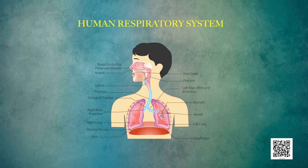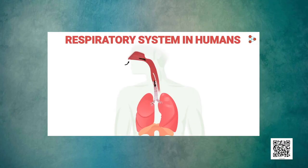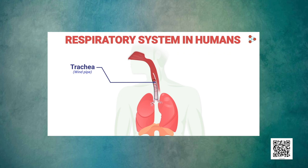Coming to the structure of the human respiratory system — it starts with the external nasal cavity, which we call the nose. Inside the nasal passage are two openings called the nostrils. We inhale air through the nose, where it is filtered by nasal hairs and mucus present inside the nasal cavity. The air then enters the pharynx, which is a common passage for both food and air. The pharynx divides: one part opens into the esophagus, and the other opens into the larynx — our voice box — which contains a pair of vocal cords that vibrate to produce sound.